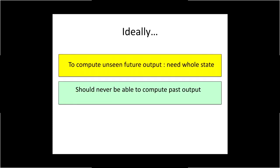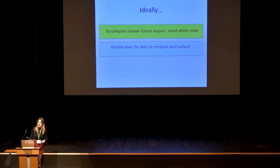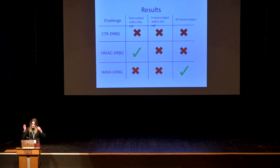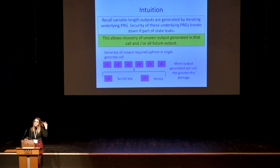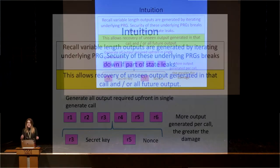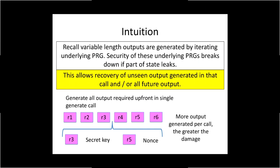In an ideal world, to compute any unseen future output an attacker should have to compromise the whole state of the generator, and under no circumstances should he ever be able to compute past output. We analyze each of the NIST PRGs within this framework, and none of them achieve all of these goals, with the counter-DRBG faring especially badly. The high-level intuition is that variable-length outputs are generated by iterating an underlying PRG, and these underlying PRGs are not forward-secure and are actually quite vulnerable when part of the state is compromised, allowing an attacker to compute unseen output. This approach of generating all output up front in a single generate call is rendered quite insecure by these attacks, and the more output generated, the greater the damage.